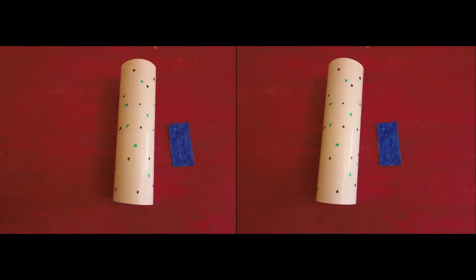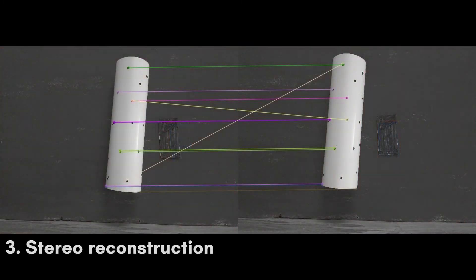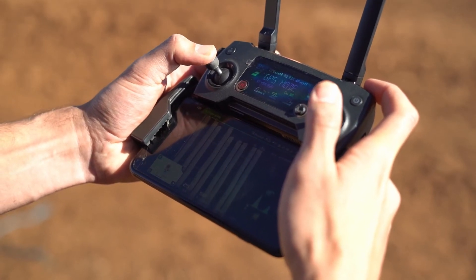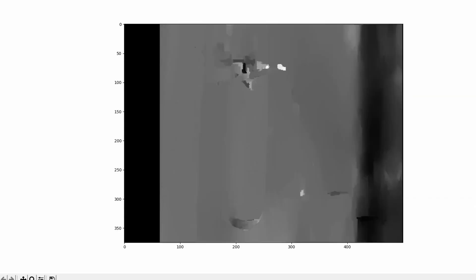Using the stereo image pair, key points are detected and matched between images to identify the camera movement between images. A depth map is created and a 3D model of the silo bags is reconstructed.